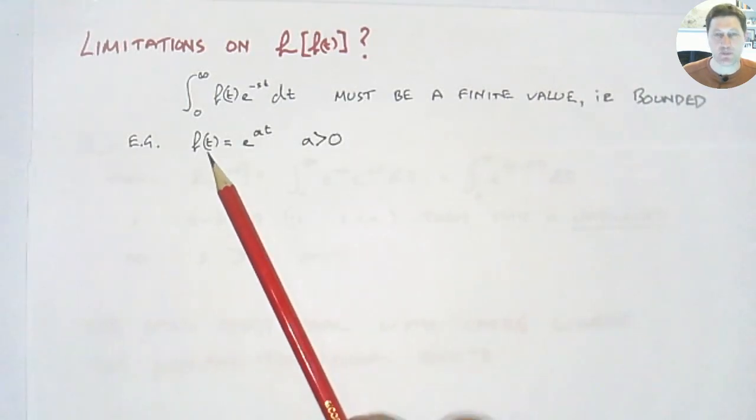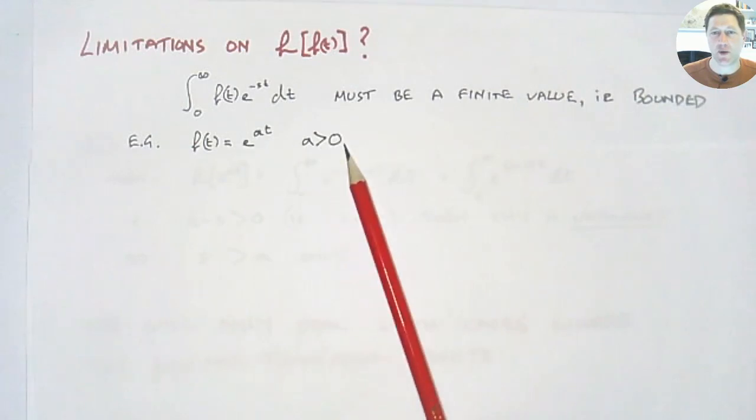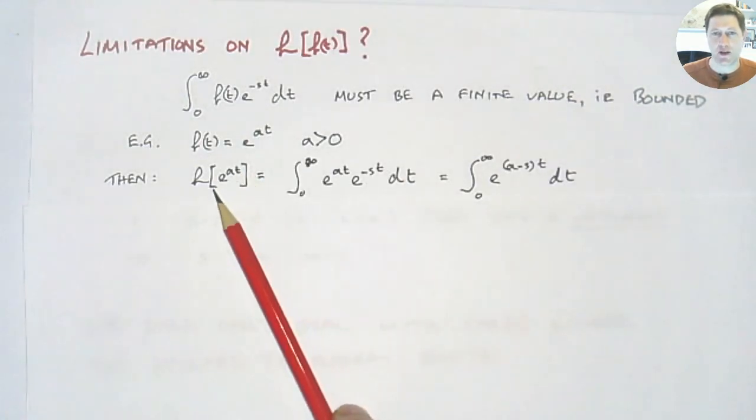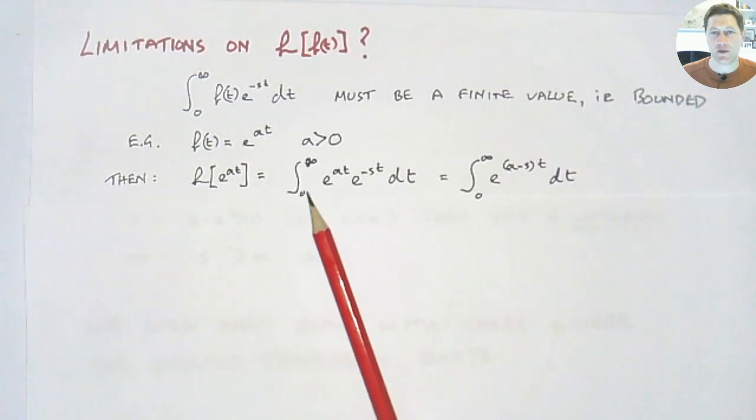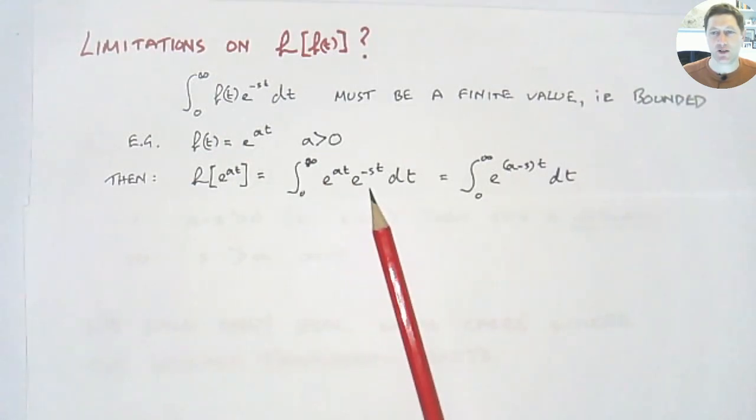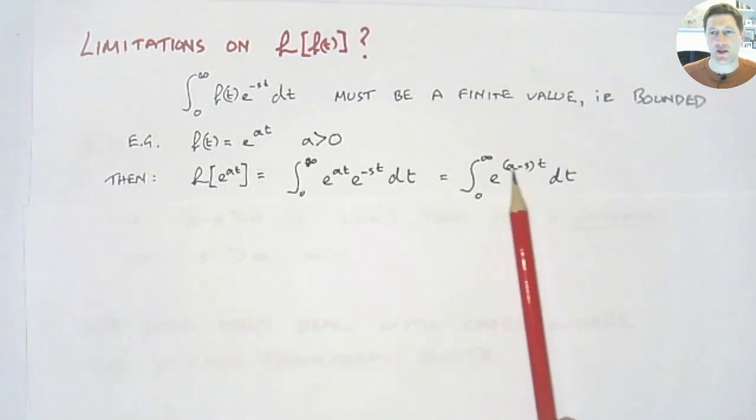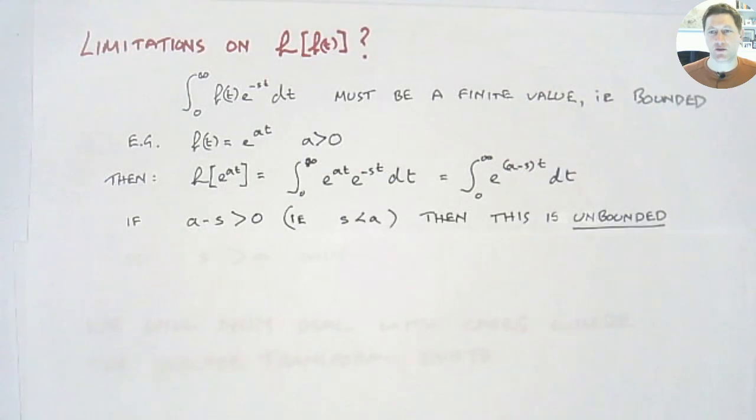So we can illustrate what this means with a simple example. f(t) = e^(at), where a is greater than 0. It's a positive number. We want to find the Laplace transform of that. To find the Laplace transform, we have our curly L of our function. So that means we need to put our function into the integral and conduct that integration. So we can do e^(-st), e^((a-s)t), we want to integrate it. But what happens when we do that? So let's consider the case. a - s is greater than 0. If that's greater than 0, we've got an exponential term with a positive exponent. And so as we integrate this, tending towards infinity for time, it's going to get bigger and bigger and bigger. So this will be unbounded. We can't find the Laplace transform for that function.